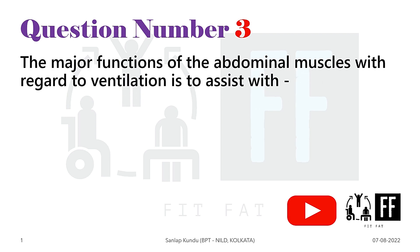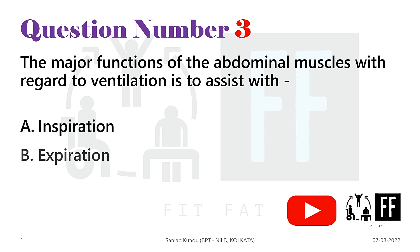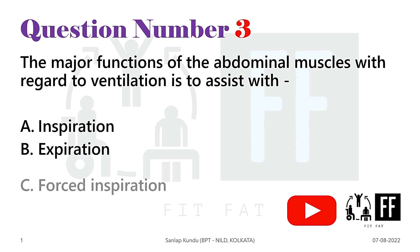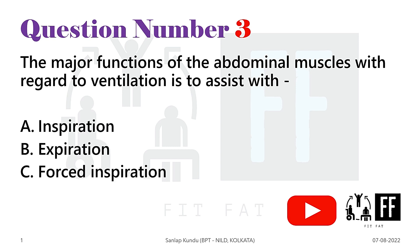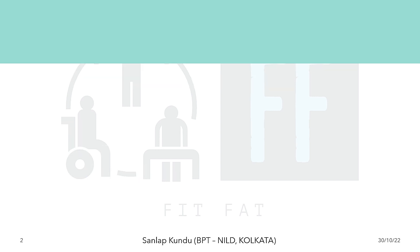Question number three: the major functions of the abdominal muscles with regard to ventilation is to assist with — option A: inspiration, option B: expiration, option C: forced inspiration, and option D: forced expiration. Now before getting to the answer, let's do some fact checking to know the answer with logical reason.